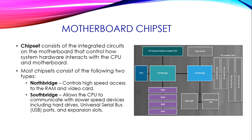Most chipsets consist of two types: Northbridge and Southbridge. Northbridge normally controls the high-speed devices such as RAM and the video card. Southbridge allows the CPU to communicate with slower-speed devices including hard drives, USB ports, and expansion slots.